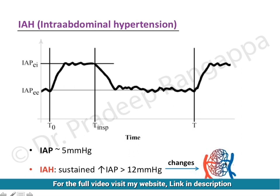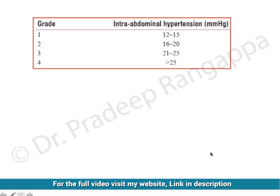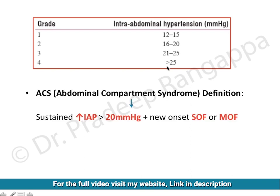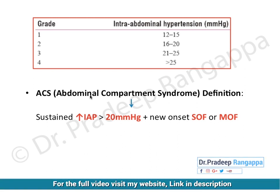The grades of intra-abdominal hypertension are as follows: Grade 1 is 12 to 15, Grade 2 is 16 to 20, Grade 3 is 21 to 25, and Grade 4 is more than 25 millimeters of mercury. Importantly, intra-abdominal hypertension is not equal to abdominal compartment syndrome.